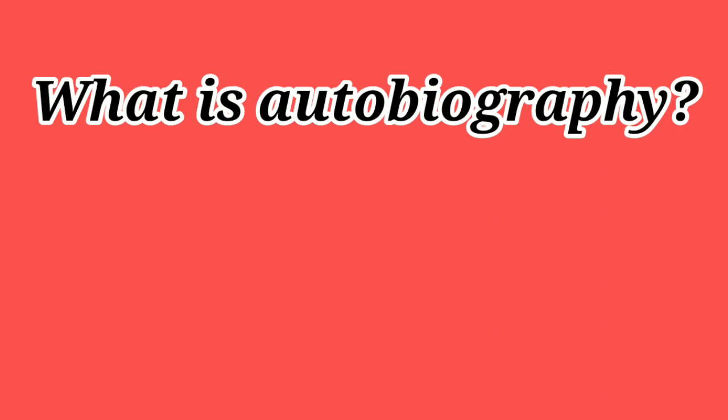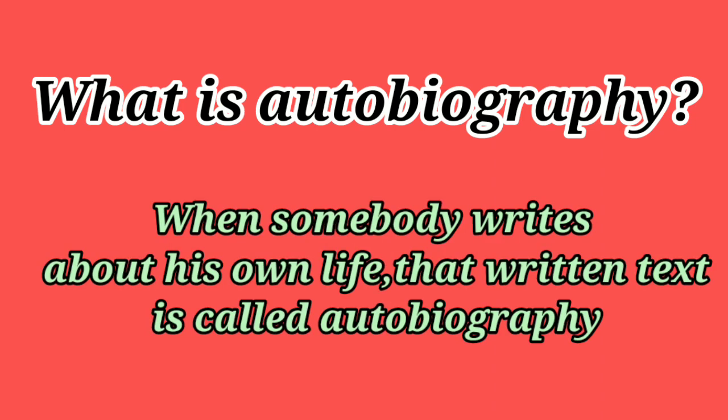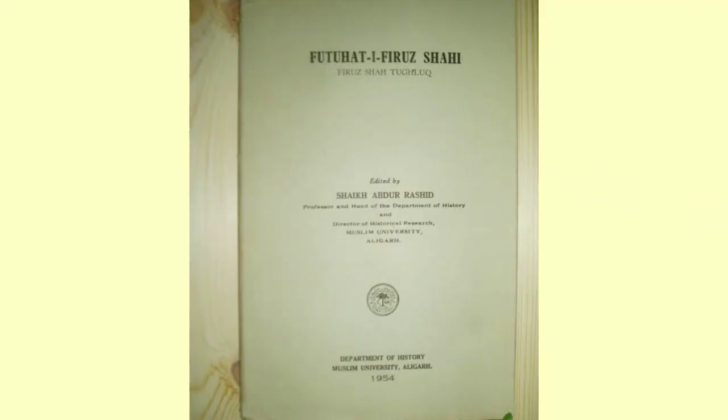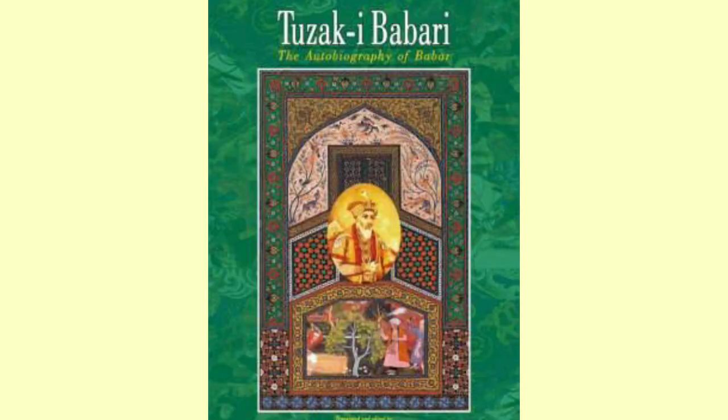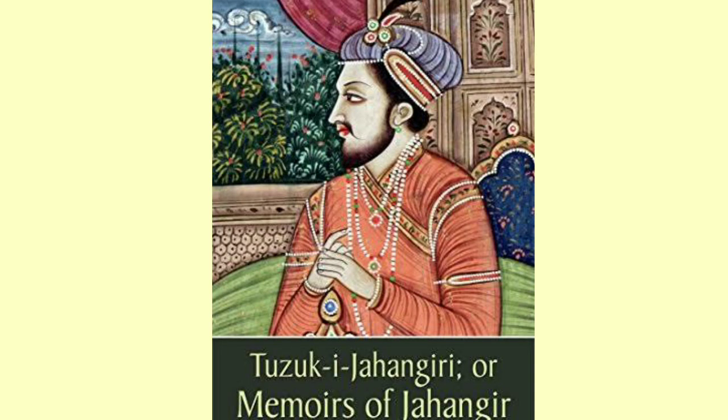The next example of secular literature is autobiographies. Autobiography means when something is written about one's own life, or when a person writes about himself or herself. Some common examples are Futuhat-e-Firoz Shahi by Firoz Shah, Tuzuk-e-Babar by Babar, and Tuzuk-e-Jahangir by Jahangir. These are examples of secular literature.